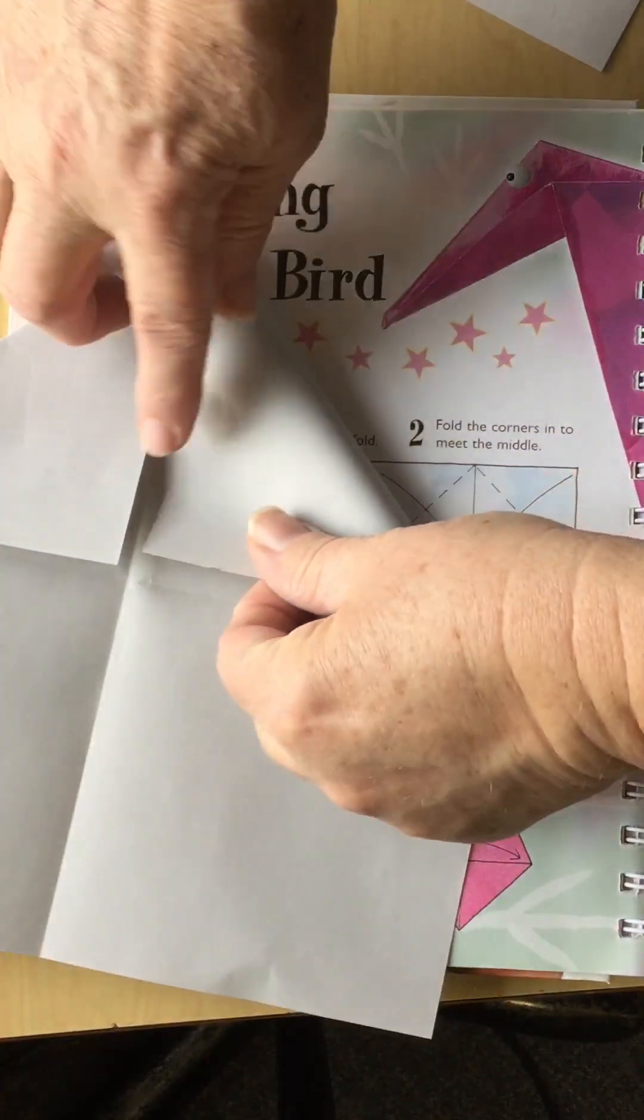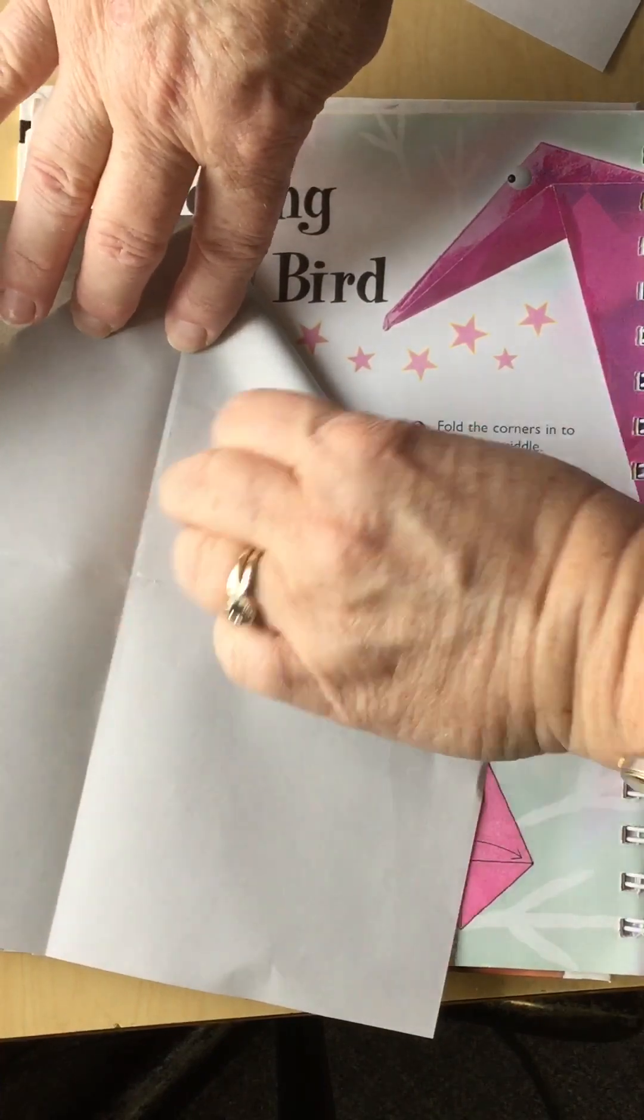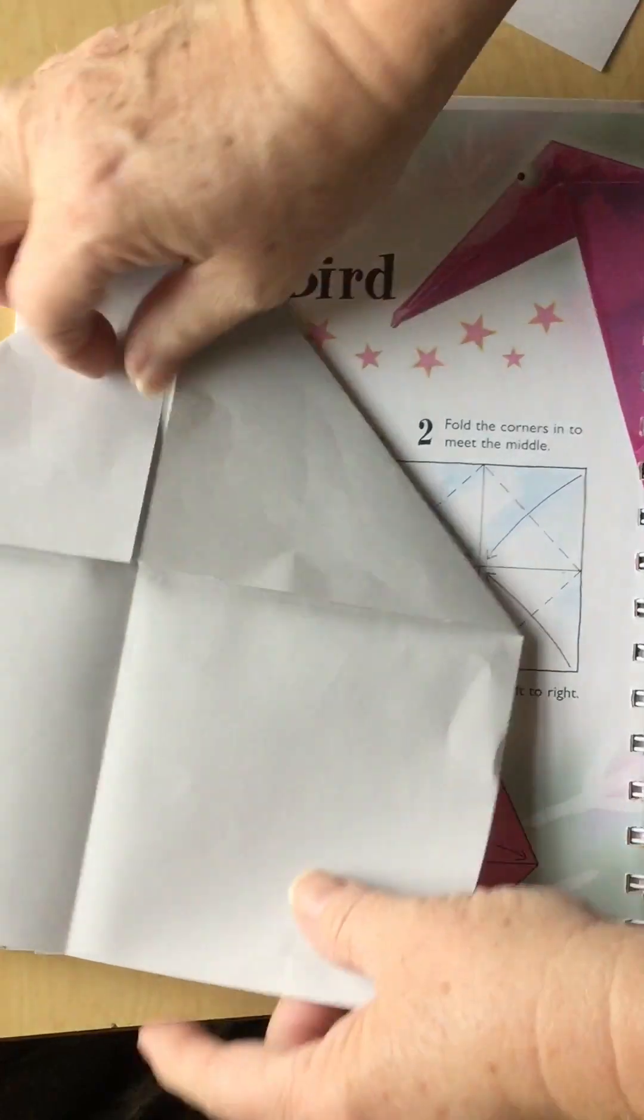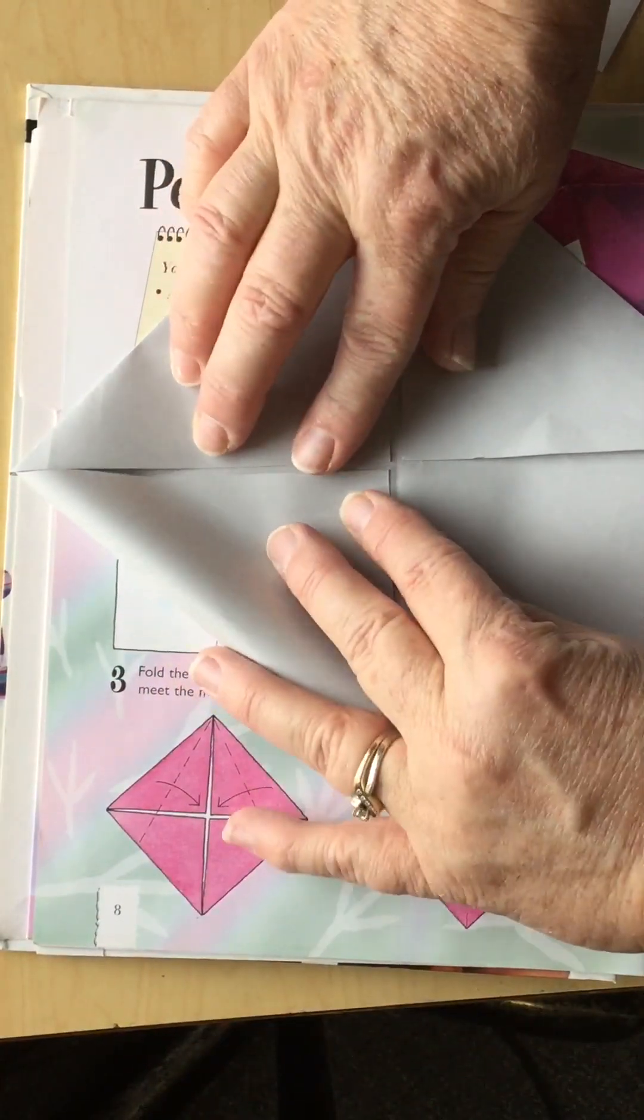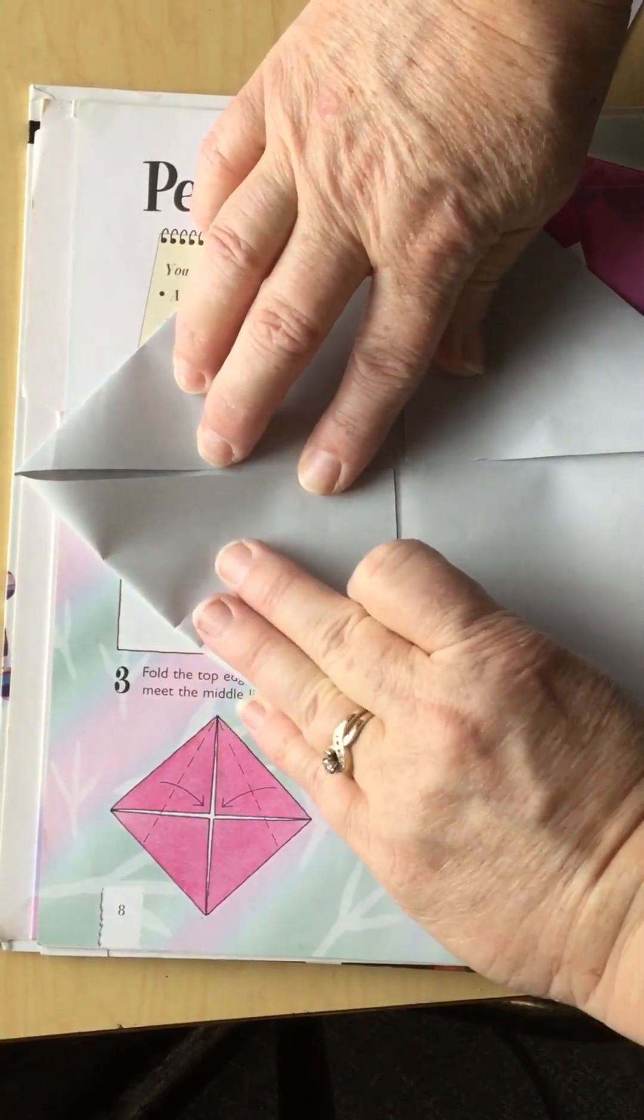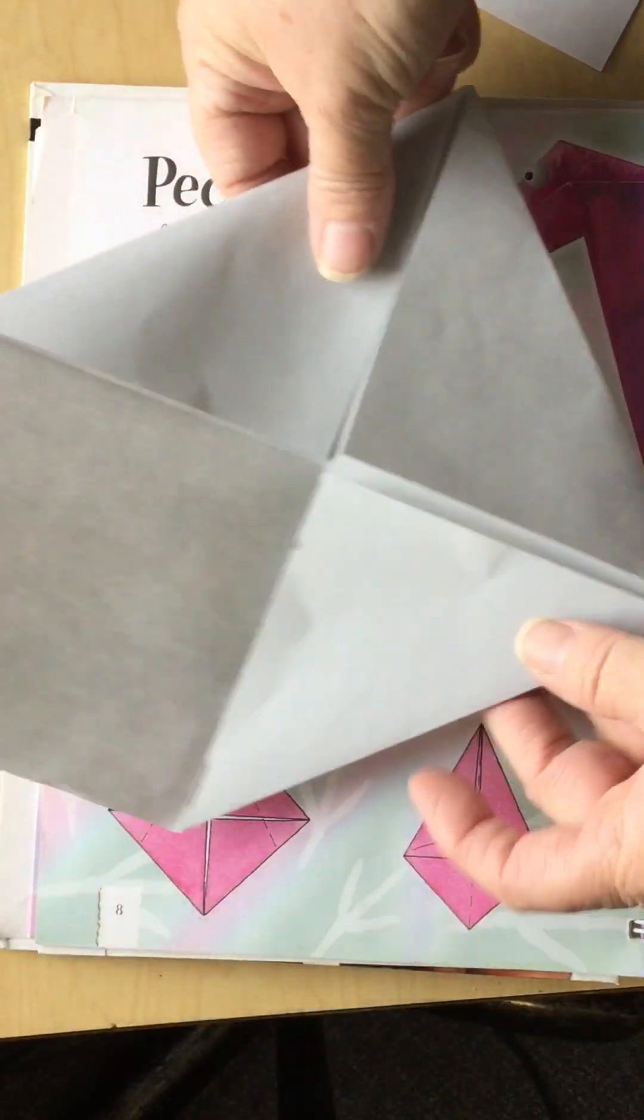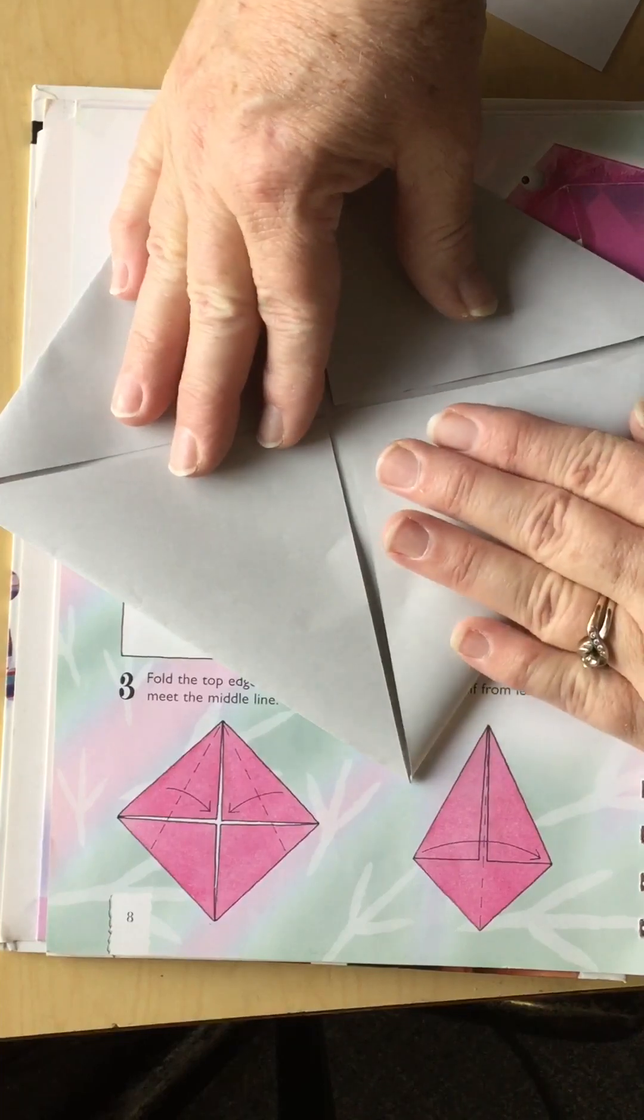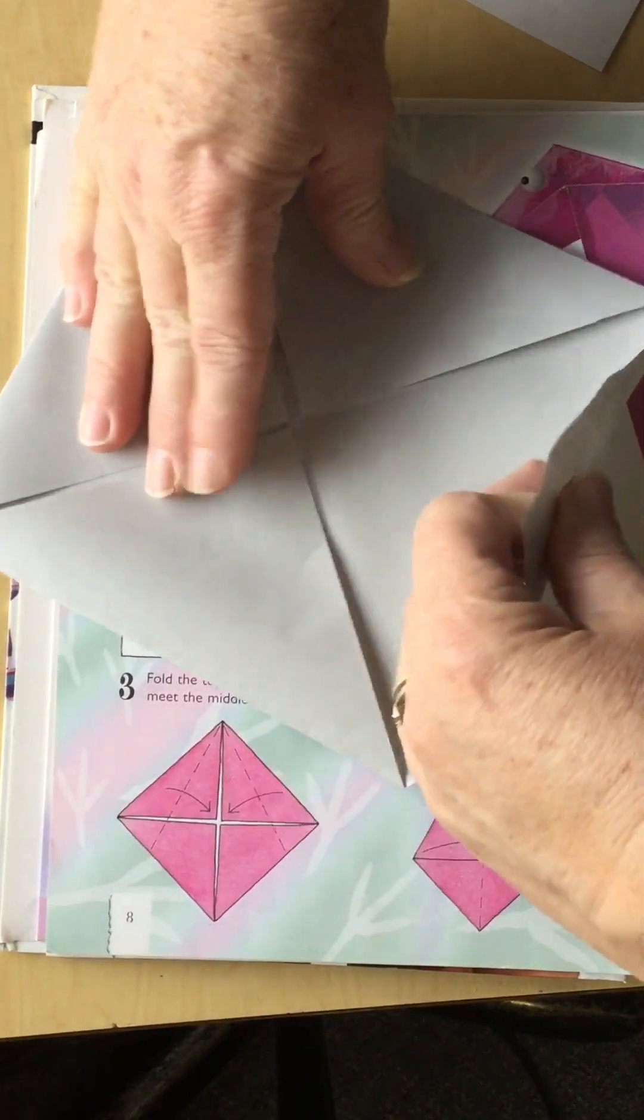And fold this one down and I want to make it by the line. Do you see that? And then this one. And after you folded three of them is when it starts to look like an envelope. You'll see that right there. And let's do this one and fold it in. We have one square made out of four triangles.